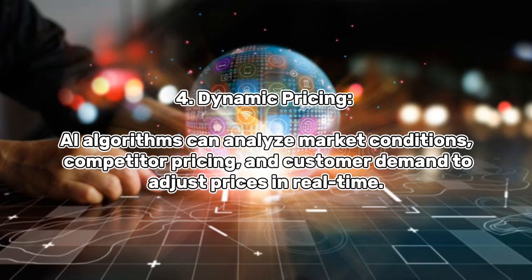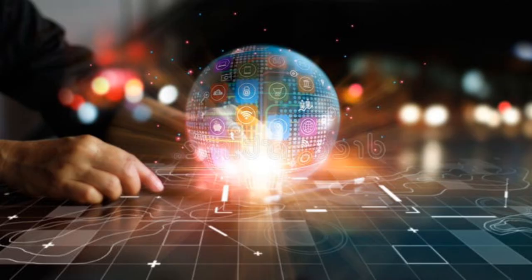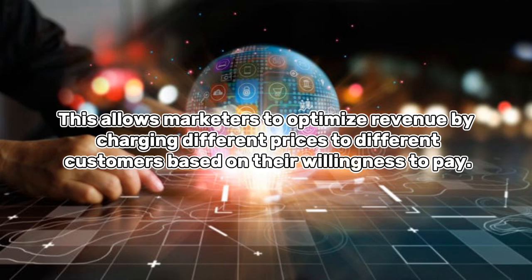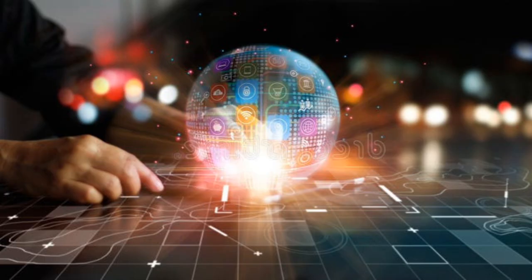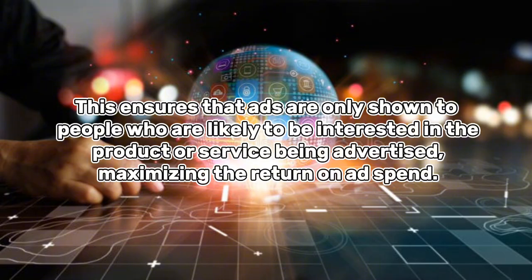Dynamic pricing: AI algorithms can analyze market conditions, competitor pricing, and customer demand to adjust prices in real time. This allows marketers to optimize revenue by charging different prices to different customers based on their willingness to pay. Personalized ad targeting: AI can be used to target ads to specific individuals based on their demographics, interests, and online behavior, ensuring that ads are only shown to people likely to be interested, maximizing the return on ad spend.